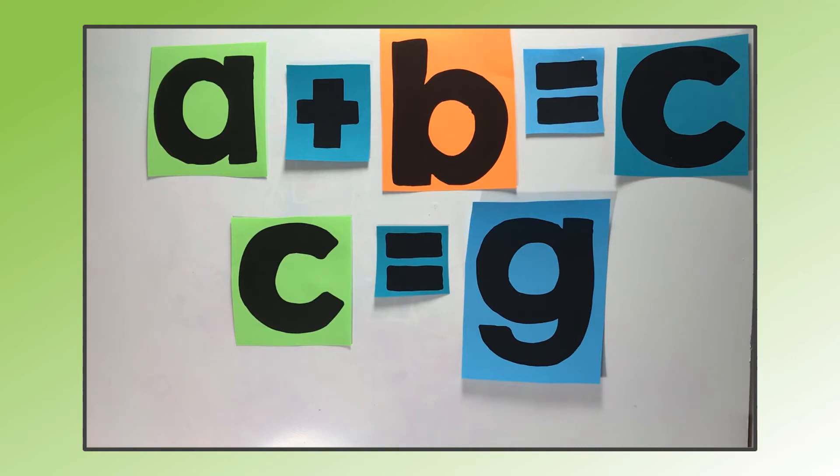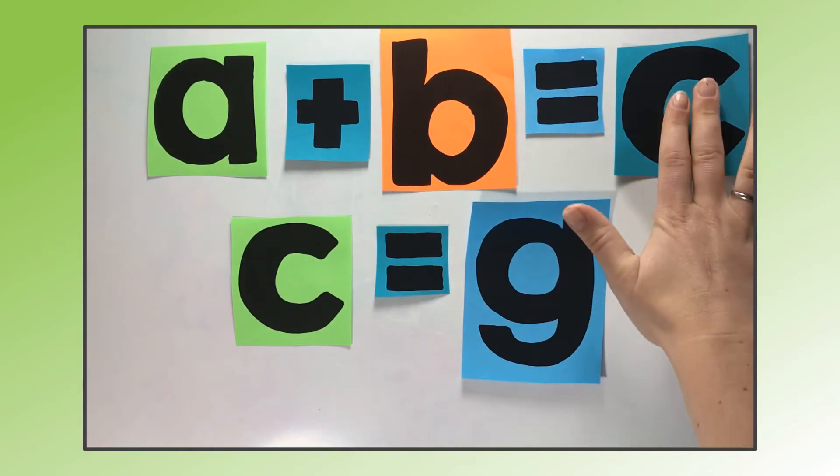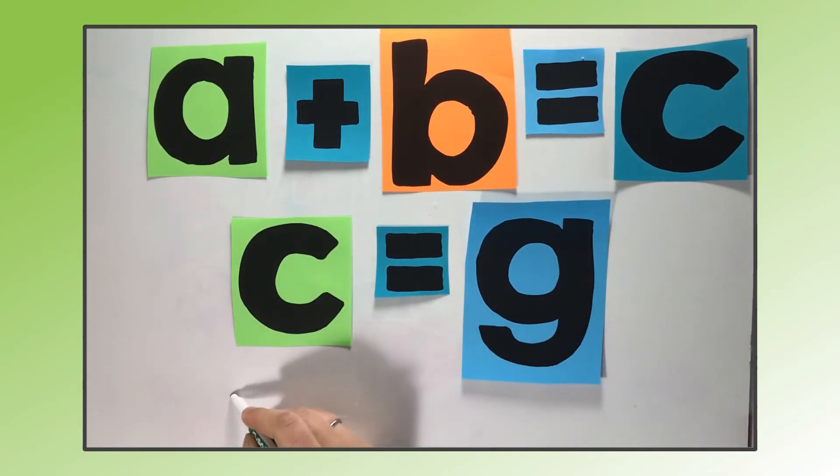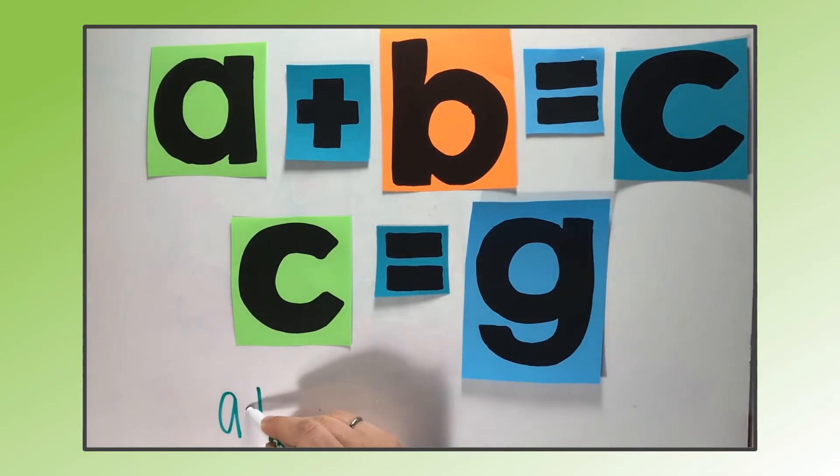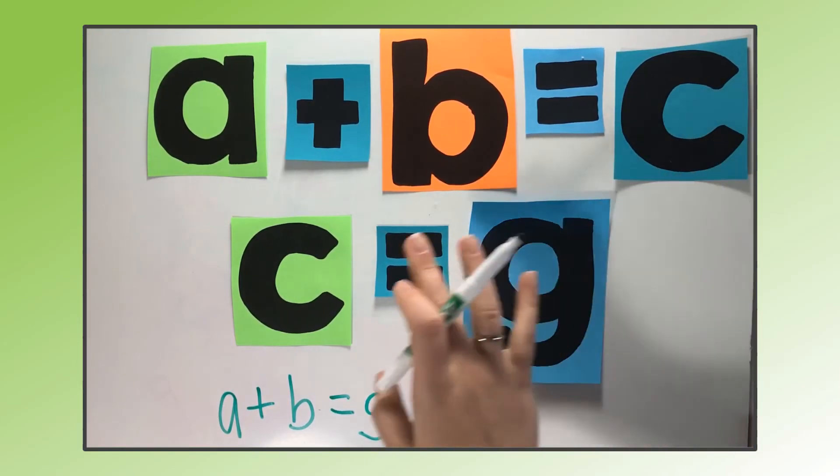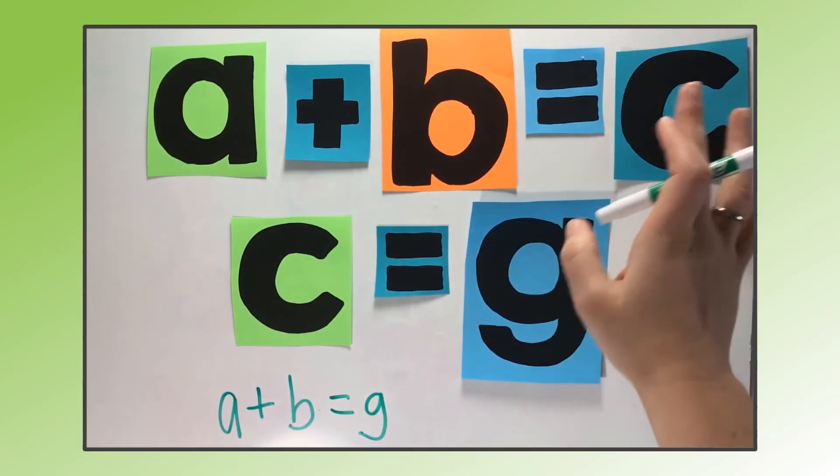If I use the definition of substitution, I can say this: Since c and g are equal, I can replace c with g. Here's my new version of line one. I replace c with g. I could justify that by saying that's a substitution. I knew c and g were equal, so I replaced c with g.